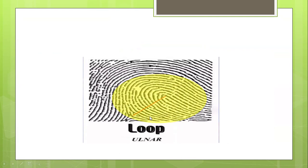This is an ulnar loop. But before we can determine that it is an ulnar loop, we first determine which hand it comes from — is it the left hand or the right hand? That is if it is a standard specimen. In this context, let's assume it is a standard specimen. We will determine whether it is from the right hand or left hand. In this illustration, it is very clear — since it is an ulnar loop, it is coming from the right hand.